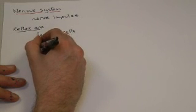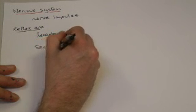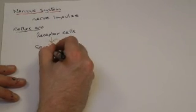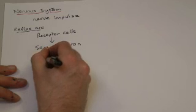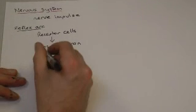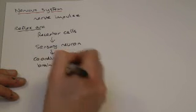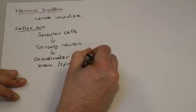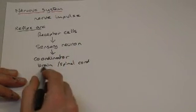You need to be talking about receptor cells. So receptor cells will detect the stimulus. A nerve impulse will then be passed along what we call the sensory neuron, and this will carry the nerve impulse to a coordinator. Now the simple way to remember the coordinator, it's either your brain or your spinal cord.